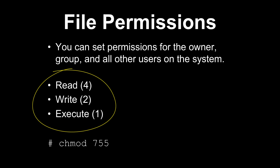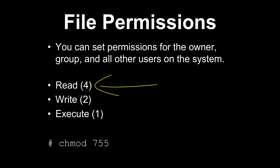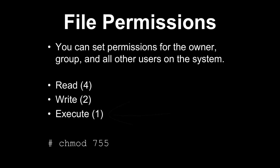The owner can have a specific level of read, write, and execute permissions. All other users on the system have a specific set of read, write, and execute permissions. Any member of the file's group has their own set of read, write, and execute permissions. Each one of these values can be represented in octal — a number between 0 and 7. Read permissions are the number 4, write permissions are the number 2, and execute permissions are the number 1. If a file were to have read and execute permissions, we would say that its permission is 5.